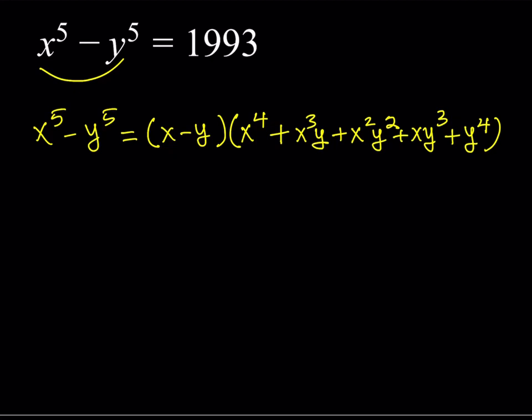Factoring makes the solution easier — we can break it down into different cases. First, notice that 1993 — this was likely a competition problem from 1993 — is prime. It has no other divisors than 1 or itself. If you have a prime number that can only be factored in a limited way, we won't have many cases. Since x to the fifth minus y to the fifth is positive, x is greater than y, so x minus y is also positive, which means the other factor is also positive.